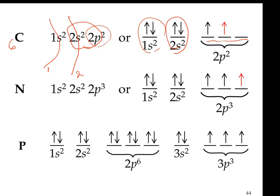For nitrogen — atomic number seven, meaning seven electrons. First shell: two electrons in 1s. Second shell: two electrons in 2s. That's four used; three are left for 2p. There are three P orbitals and three electrons left. These three electrons try to occupy the maximum number of orbitals — three single rooms in a hotel, three orbitals, three electrons. Each electron picks its own orbital; one electron doesn't want to pair up unless it has to.